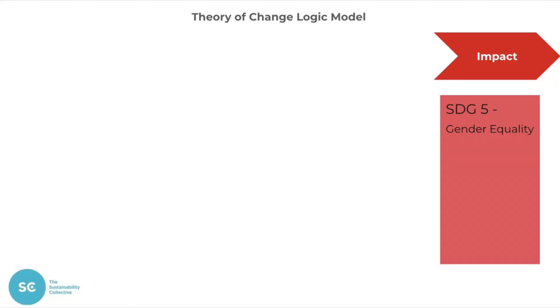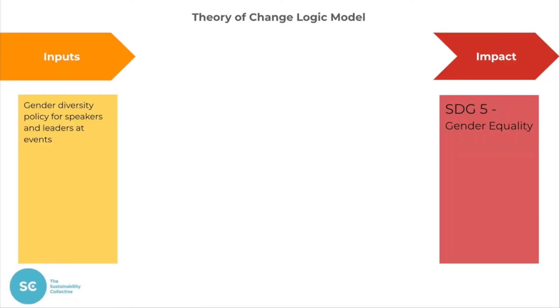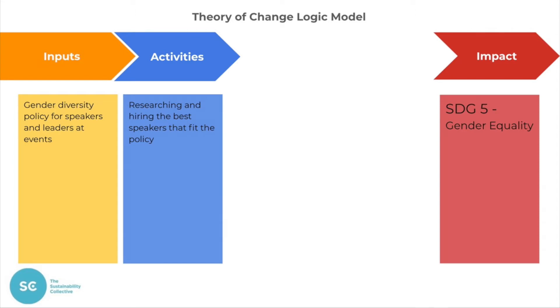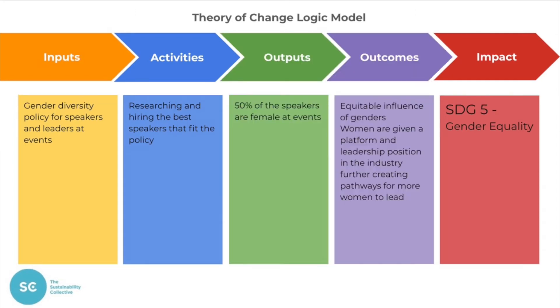So let's try this with SDG 5 as a practice. The input would be a gender diversity policy on speakers for your events. The activity would be researching and recruiting the best possible speakers. An output would be 50% of the speakers are female. The outcome would be equitable representation of genders — you're also giving females in your industry a voice, which further inspires other women to step up. And the impact being progress towards SDG 5.